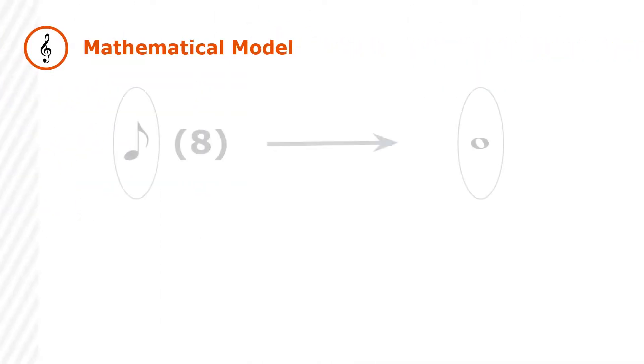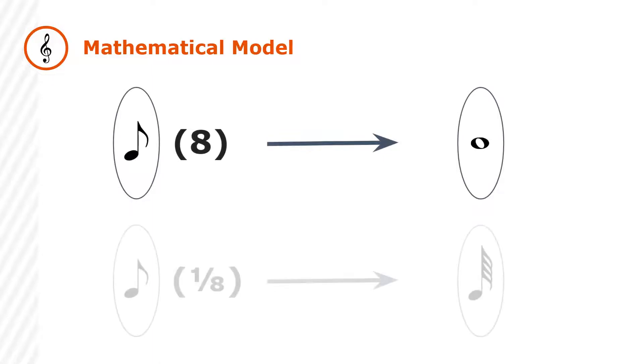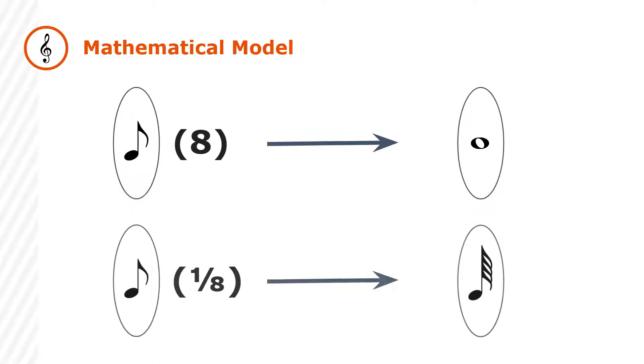What makes Music AI unique is its ability for reciprocal mathematical manipulation. Each musical element is a mathematical model, which gives us the ability to numerically manipulate and analyze trends in the music.